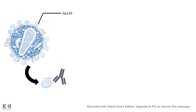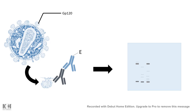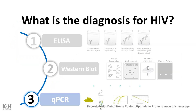If the virus has GP120, it can be detected by a specific antibody in the Western blot, which appears as a distinct band in the result. Another diagnostic test is qPCR.